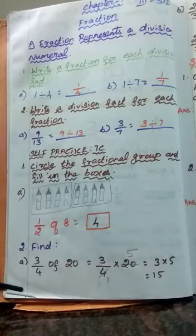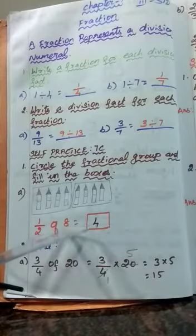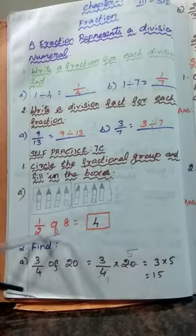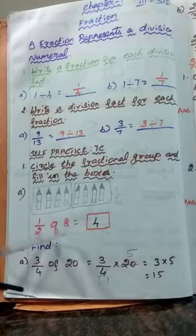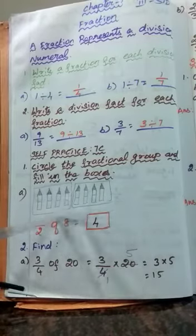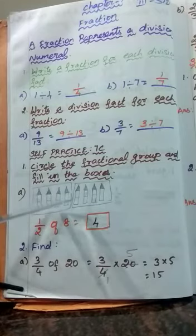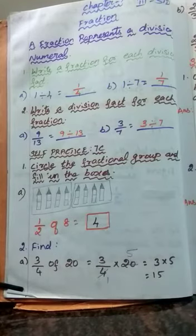So 1 by 2 of 8: total number is 8. From that 8, you divide by 2 means half — so 1 part is your share. You divide these 8 into 2 groups, and each group contains 4. You circle that — one circle contains one group. So 1 by 2 of 8: in one group, how many pictures are there? 4. So that is your answer: 1 by 2 of 8 is equal to 4. This is the method of writing using pictures.